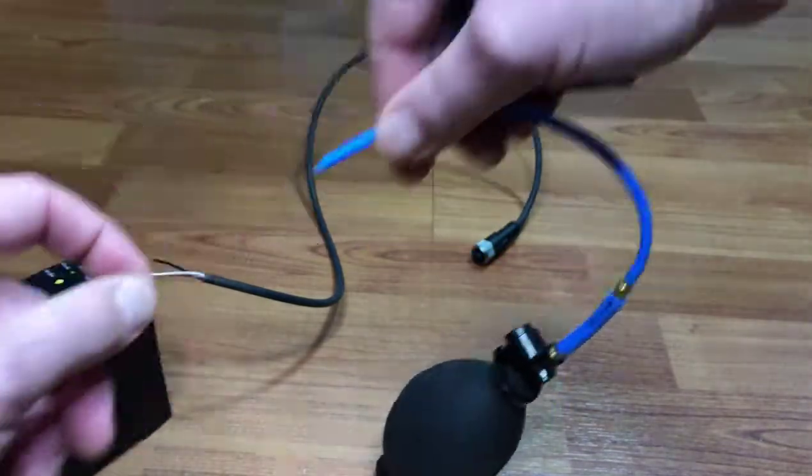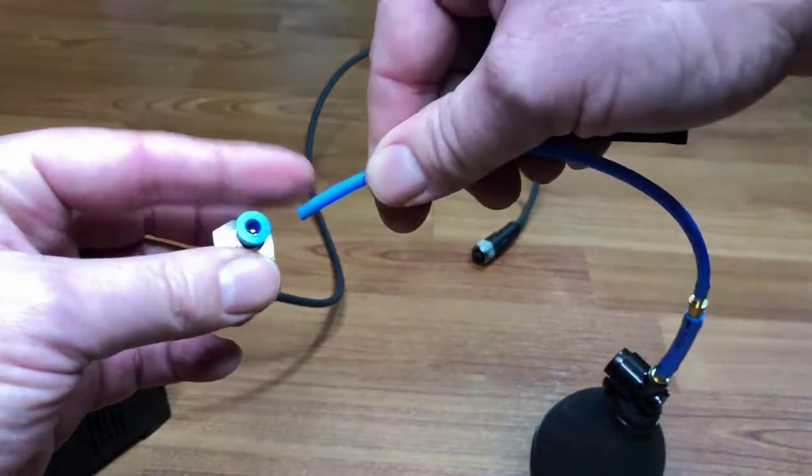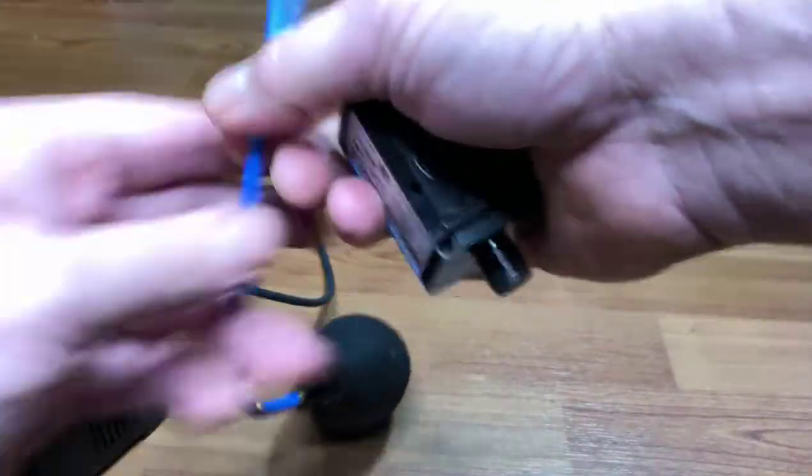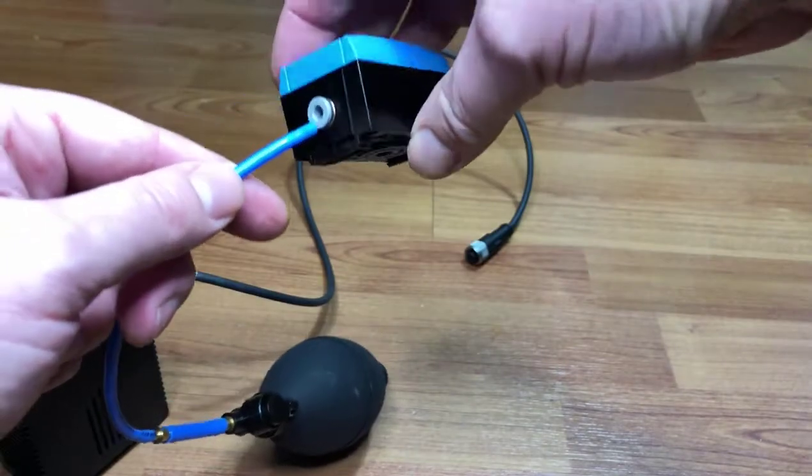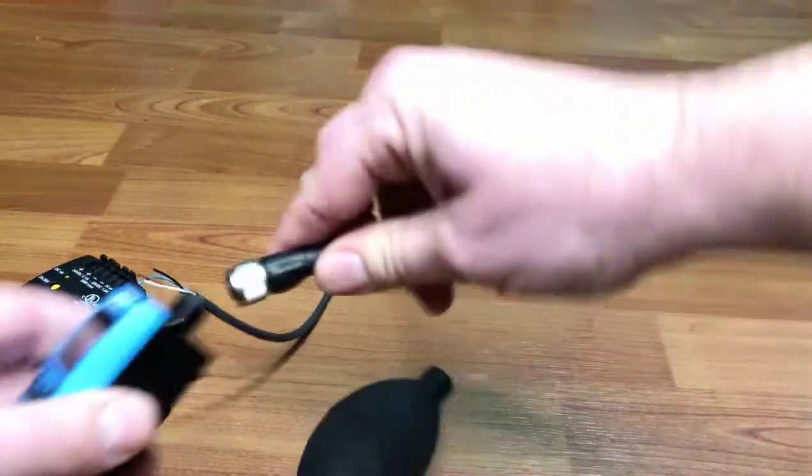We're going to pull back on the release, push it, pull it back with one hand and pull on the tube with the other. Then we're going to take that up to the side, take the tube and push it into the push-in fitting. Now we've got air pressure.